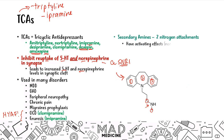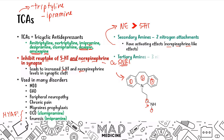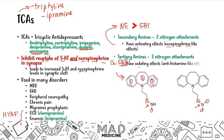Secondary amines have activating, norepinephrine-like effects because they are relatively selective for norepinephrine rather than serotonin — they favor norepinephrine. Tertiary amines, on the other hand, have three R groups attached to the nitrogen, and they have more sedating, antihistaminergic effects because they favor norepinephrine and serotonin equally. That is a key distinction to be aware of with TCAs.